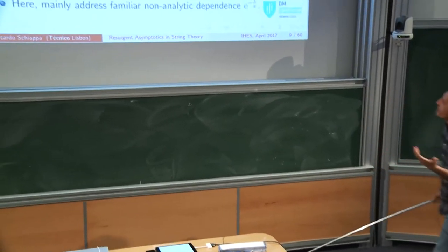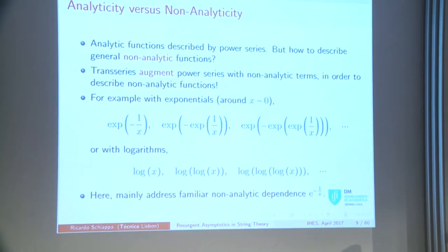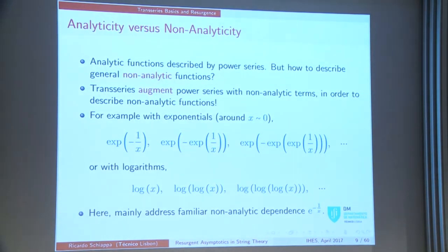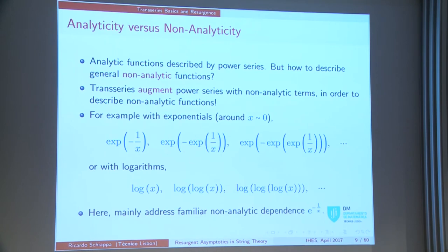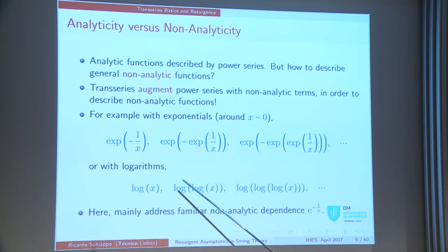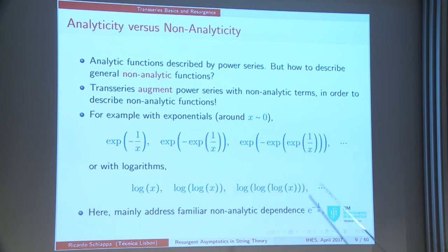The idea of defining a general trans-series is very basic: analytic functions are described by power series. If I want to describe general non-analytic functions, I augment power series with non-analytic terms. The idea is simple but can lead to extremely complicated objects. Starting iterating the standard non-analytic term, I can get arbitrarily weird things — extremely suppressed and hard to see — or I can put logs, or combine everything.